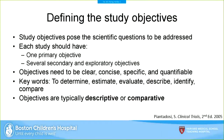The first piece is defining the study objectives. These objectives pose the scientific questions to be addressed in your study. In general, a study should have one primary objective and a number of secondary and exploratory objectives. You want the objectives to be clear, concise, specific, and most importantly quantifiable — something you could measure objectively. When writing objectives, consider keywords such as: to determine, to estimate, to evaluate, to describe, to identify, or to compare.